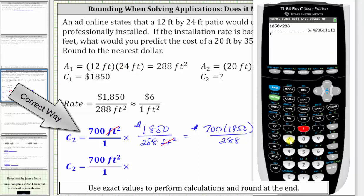In the numerator, we have 700 times 1,850, closed parenthesis, and then divided by 288. Now that we've performed the calculation with the exact rate, we will now round to the nearest dollar. Because we have a 5 in the tenths place value, we round up to $4,497.